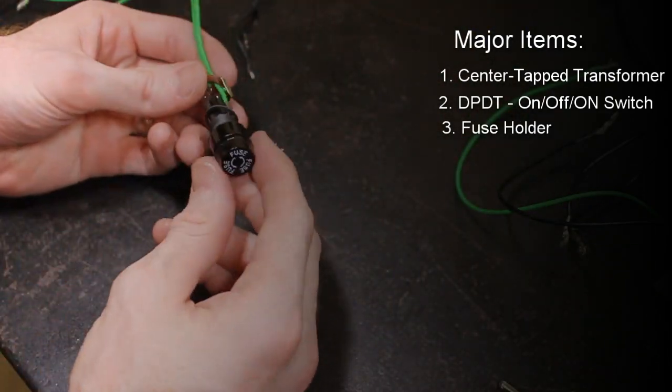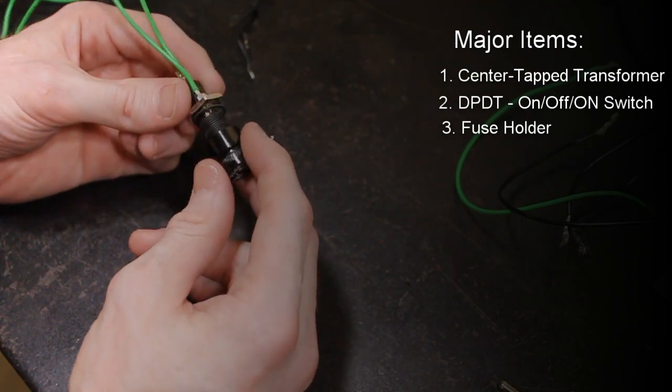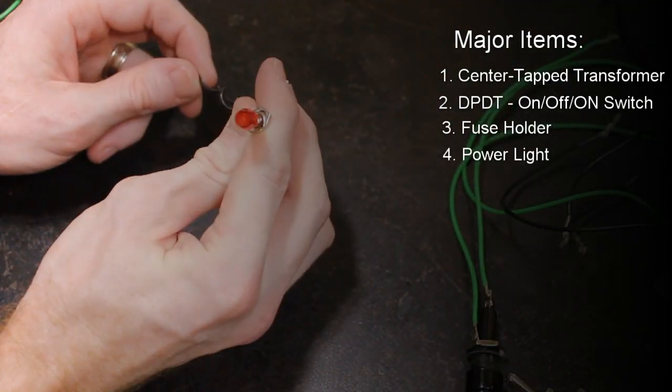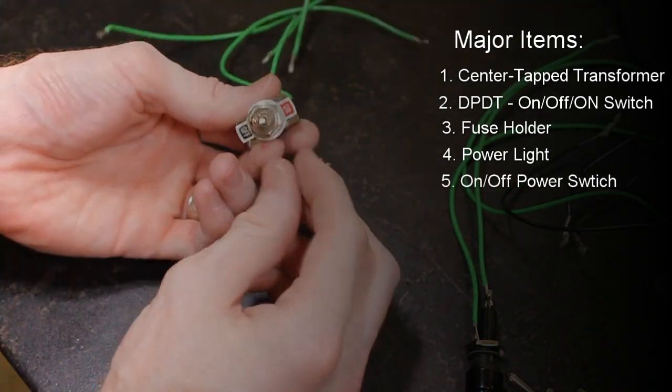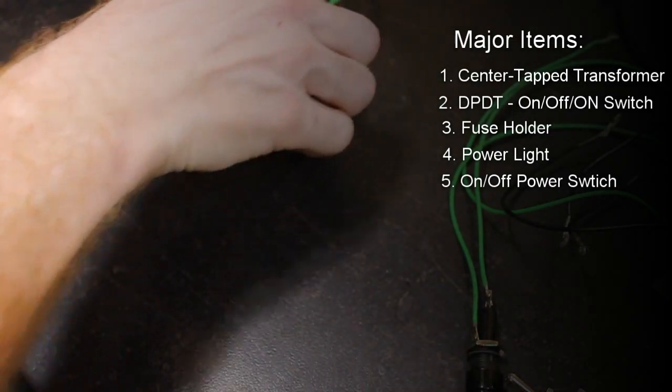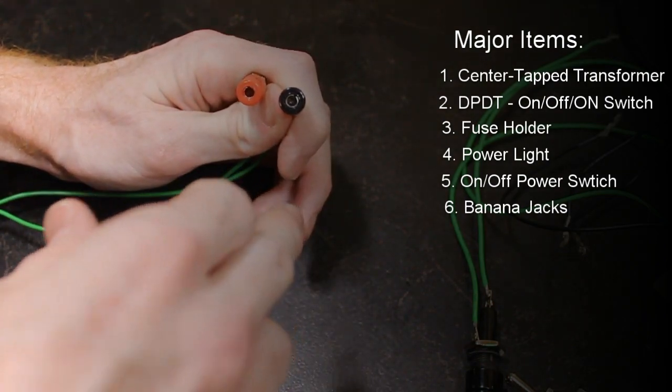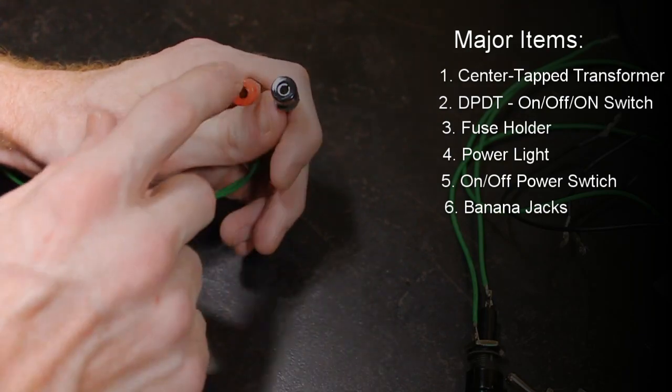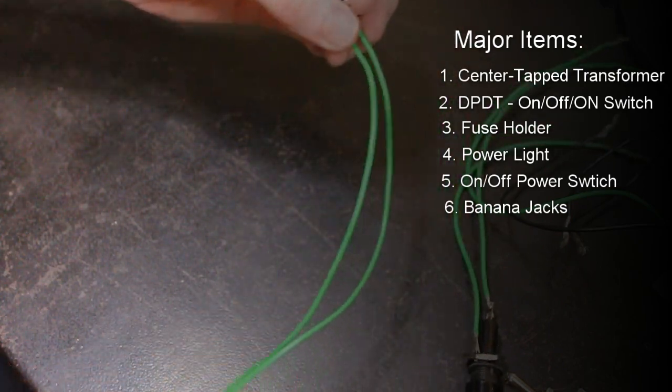This here is our fuse holder. So this is going to hold a one amp fuse for our unit just to keep it nice and protected. We have a light to tell us when the unit is on and off. We have an on and off switch toggle switch. We have our two alligator clip plug-ins or banana plug plug-ins. This is going to be where our leads plug into for our etching handheld piece.